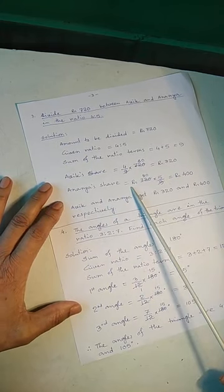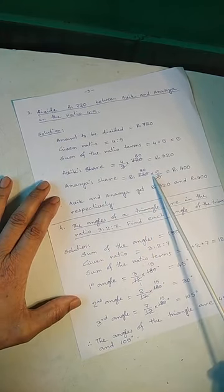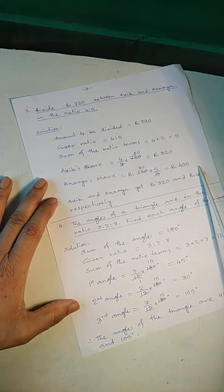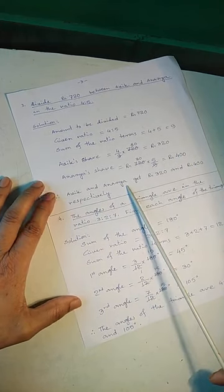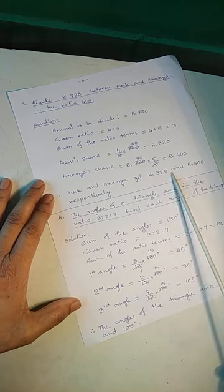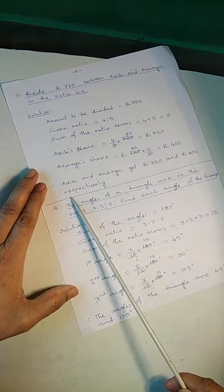Ananya's share equal to Rs. 80 into 5 by 9 equal to Rs. 400. Avik and Ananya get Rs. 320 and Rs. 400 respectively.